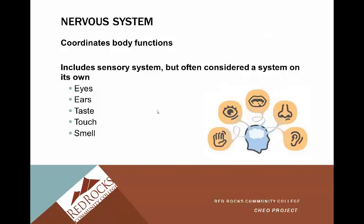The nervous system coordinates body functions. The sensory system is often spoken about on its own, but it is part of the nervous system. All your sense organs — your eyes, ears, taste, touch, smell — are part of the sensory system, and they're how you navigate your environment. The nervous system coordinates all these different body functions. For example, with sense of touch: if you're over a hot stove, your pain receptors immediately send a message to your brain saying 'hot, lift your hand,' and it's lifted off. That coordinated body function keeps us from causing pain or harm to the body.